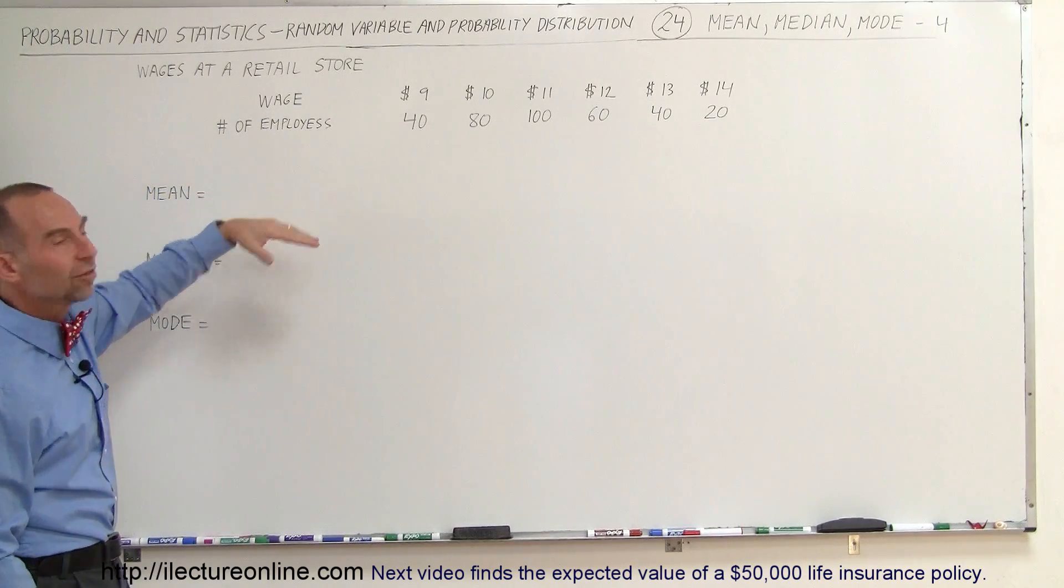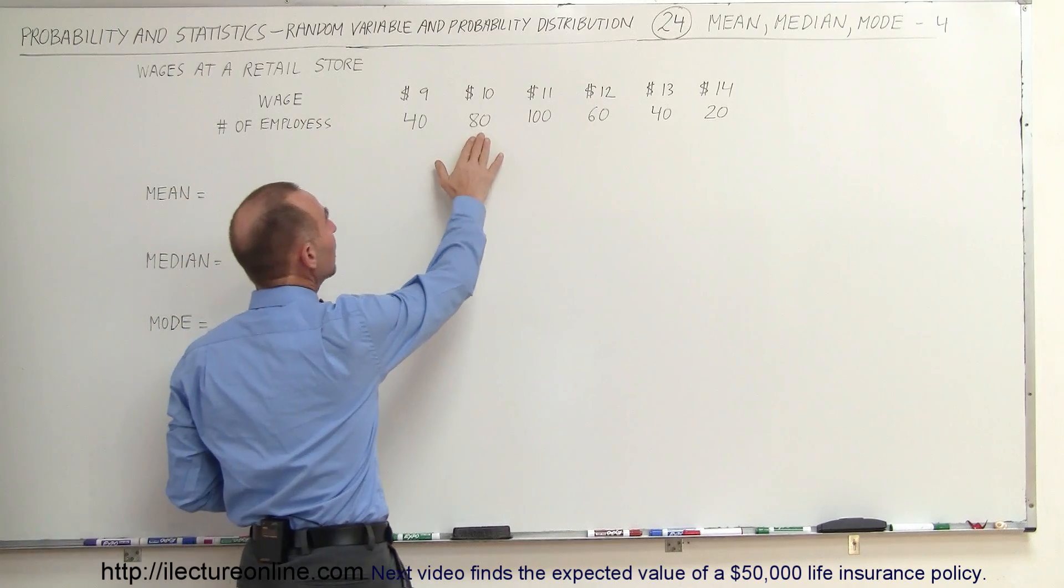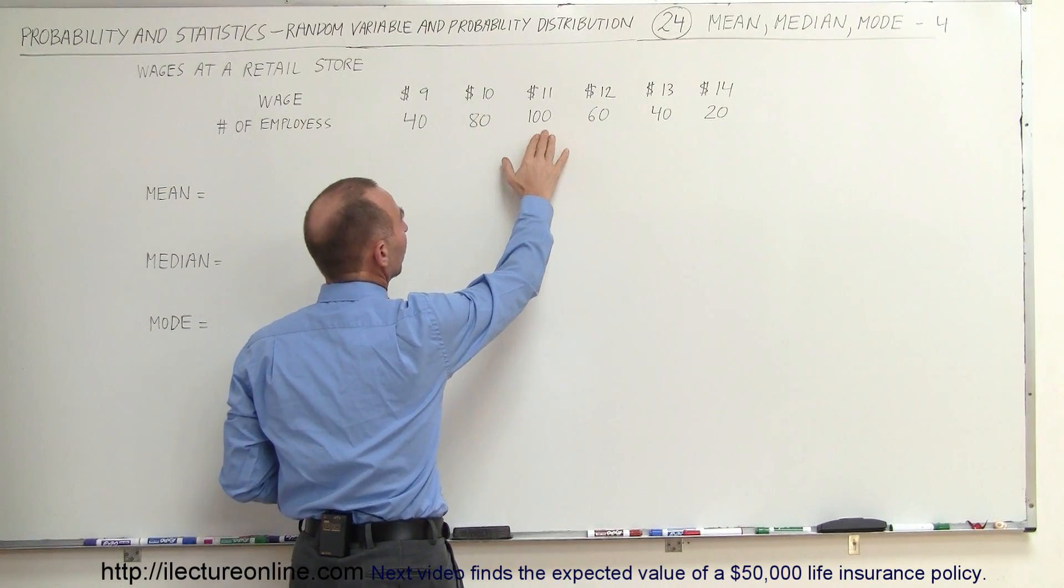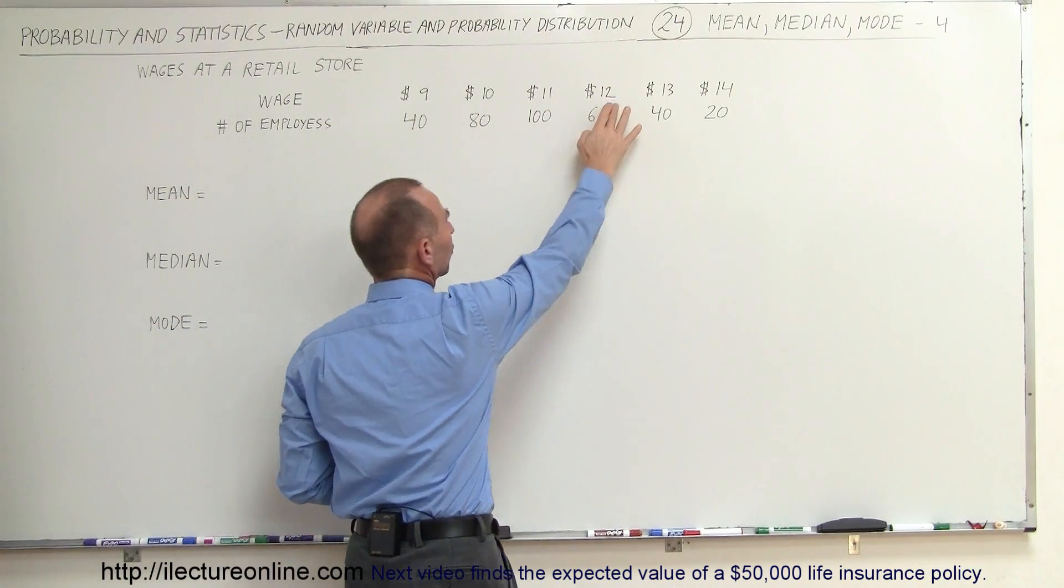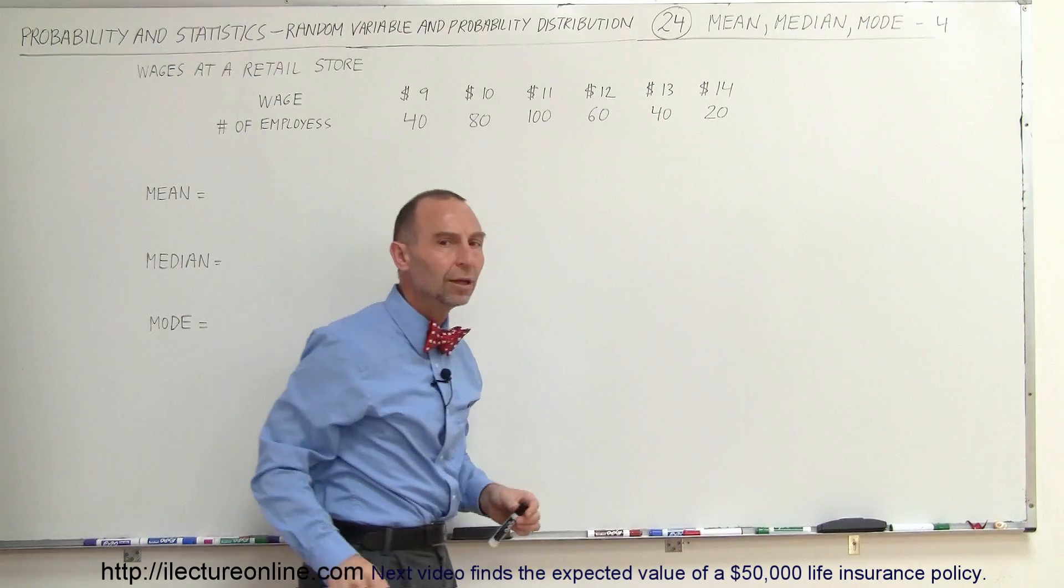And when we count all the employees and ask them what kind of wage they're earning, you see that 40 are earning $9, 80 are earning $10, 100 are earning $11, 60 are earning $12, 40 are earning $13, and 20 are earning $14.